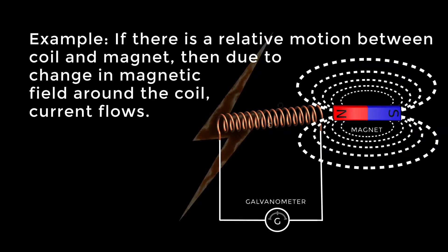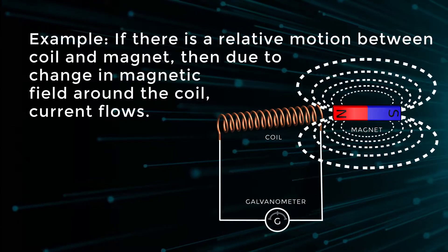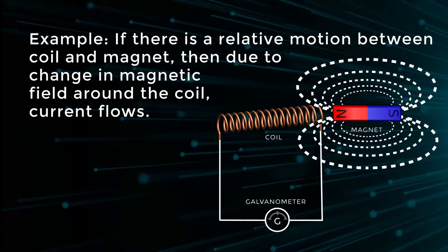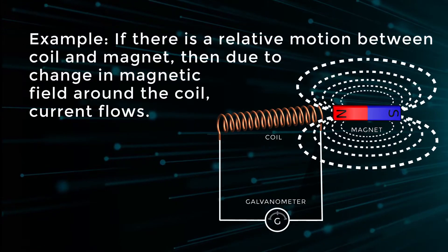For example, if there is a relative motion between a coil and a magnet, then due to the change in magnetic field around the coil, current flows. This can be shown here.